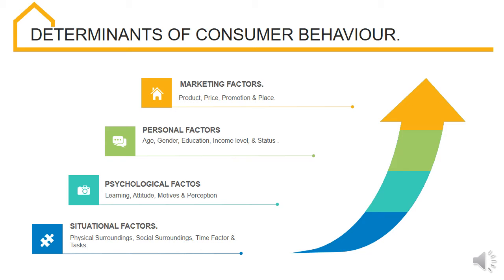The various components of promotion such as advertising, publicity, public relations, personal selling, and sales promotion influence buying behavior of consumers. Marketers select the promotion mix after considering the nature of customers. Regarding place, the channel of distribution and the place of distribution affect buying behavior of customers. Marketers try to choose an appropriate channel and distribute the product at the right place.